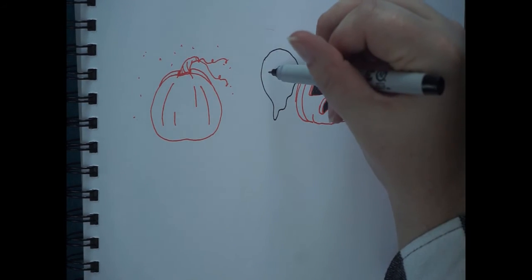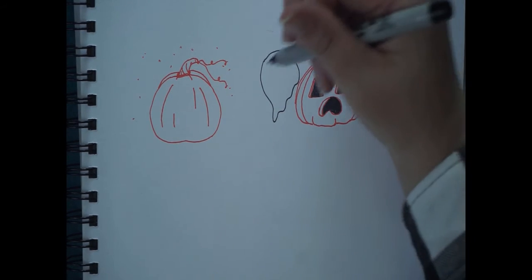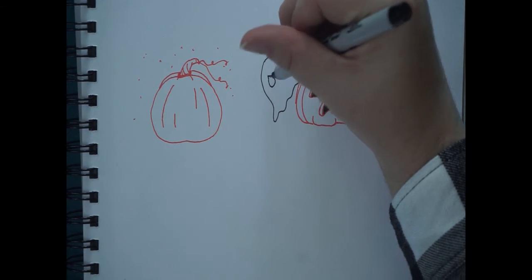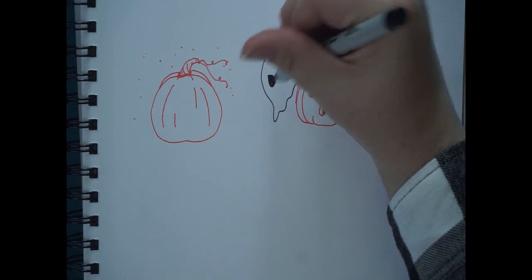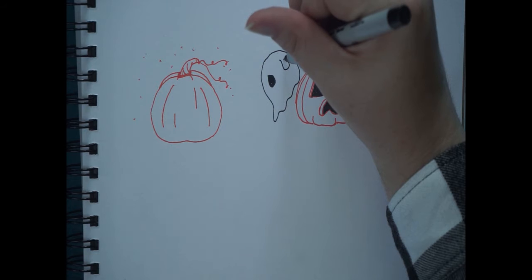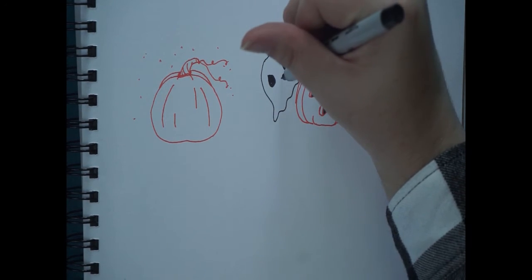I just chose to do a basic black mouth and black eyes so you could kind of see. My pumpkin looked very surprised and so I gave it something to be surprised at. I just drew a little ghost who's also surprised to see a jack-o-lantern. Maybe it's the ghost's first Halloween, who knows.